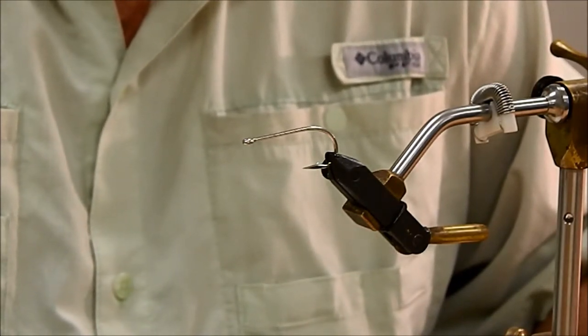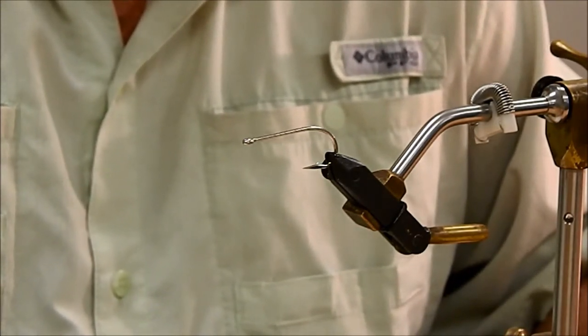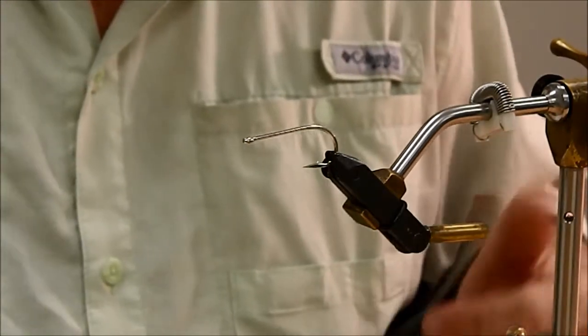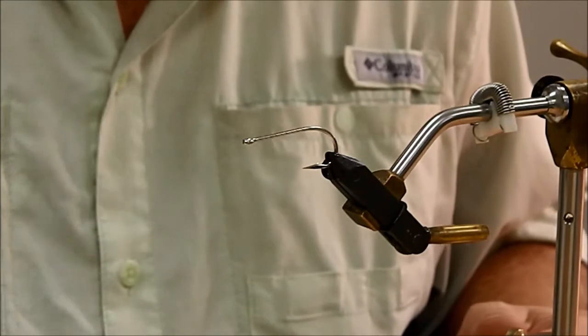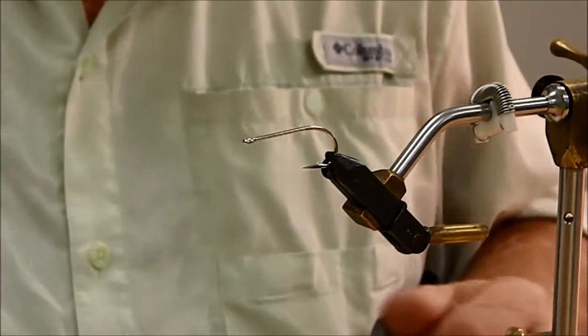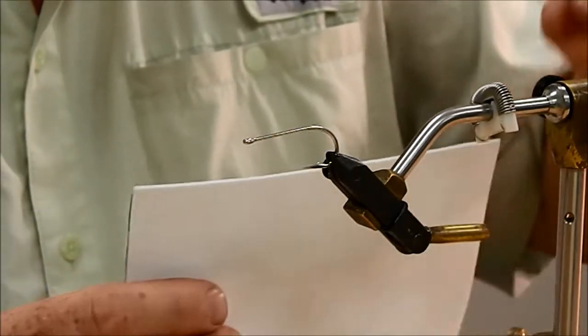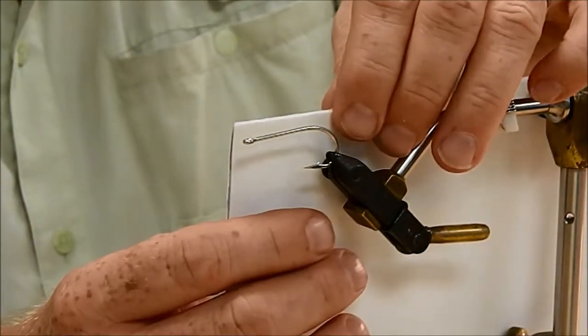This is a Gamakatsu SS-15 in a 1-Ot. You can use any kind of hook you like. A rule of thumb on tying the crease fly is to use the distance on the shank of the hook to get your measurements.